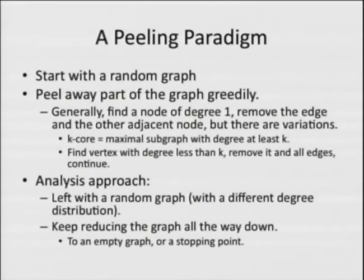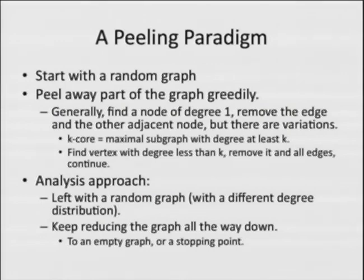The general approach is: find a node of degree one, remove all edges and the other adjacent node, and continue. A common variation is you might not need the node to have degree exactly one — being okay as long as its degree is at most some number K. Combinatorialists and graph theorists will know this as the K-core: the maximal subgraph where all vertex degrees are at least K. The K-core is unique and you find it by peeling — continuously removing vertices with degree less than K.